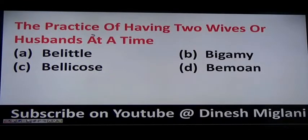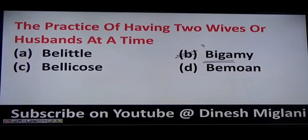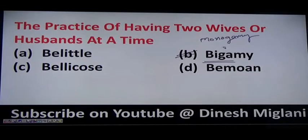The practice of having two wives or husbands at the same time is bigamy — more than one marriage. A single marriage is monogamy. More than two marriages is polygamy. Two marriages specifically is bigamy.